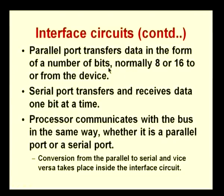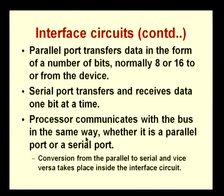We were discussing different interface circuits and the two sides of the interface: one to the computer side and one to the device side. The device-side interface is normally the port, and there are two types: serial and parallel. A parallel port transfers data in groups of bits — normally 8 or 16 — from the device. A serial port transfers and receives data one bit at a time. The processor communicates with the bus in the same way regardless of whether it is a parallel or serial port.